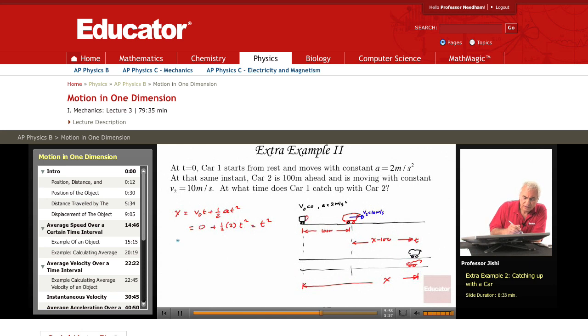If I write x minus 100, this is equal to the displacement of car 2. But the displacement of car 2 is simply v2 t. There's no acceleration, so it's just the velocity times the time. And v2 is 10, so this is 10 t. I have x minus 100 is 10 t, and x is t square. So I put for x, t square. It becomes t square minus 100 is 10 t.